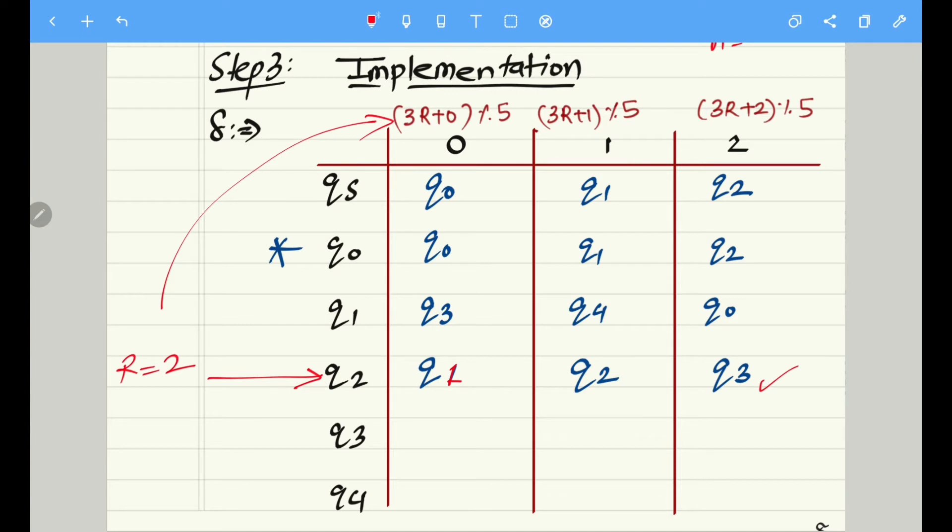With similar logic we can complete this table. For state Q3, the remainder is 3, so it becomes 3 threes are 9. 9 mod 5 gives 4, which corresponds to Q4. Using the same logic it becomes 3 threes are 9 plus 1, 10 mod 5. Now we know that 10 is completely divisible by 5, so the remainder will be 0, which corresponds to Q0. With similar logic it becomes 11 mod 5, which corresponds to Q1.